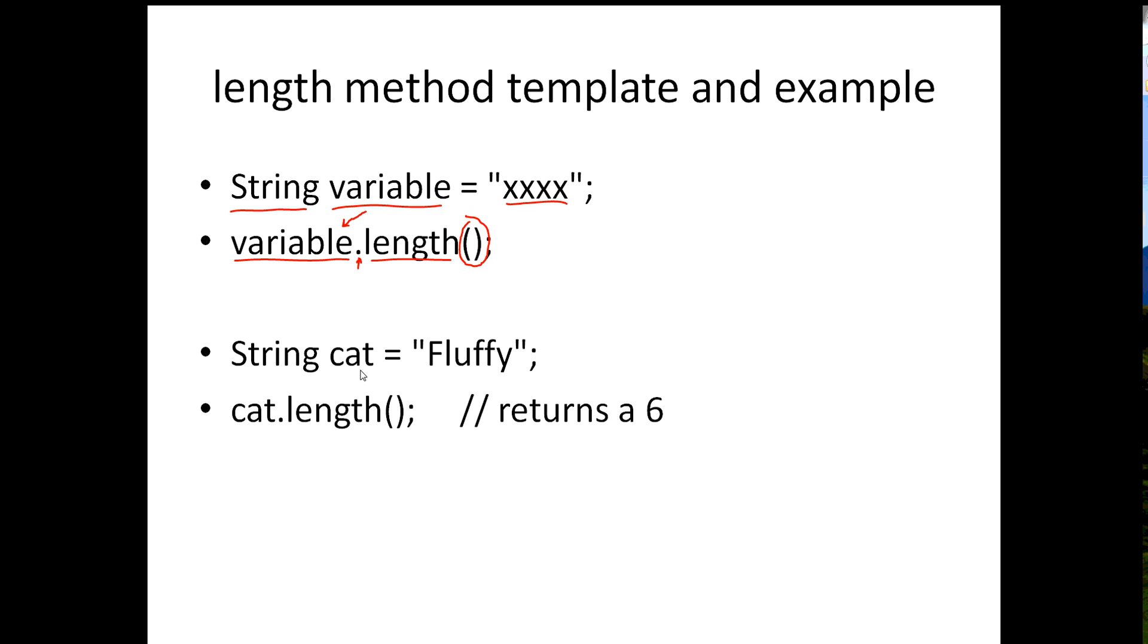Now an example of how that works. If you have a variable named cat, this is data type string, and here's the literal string that's the value of this variable. You have the name of the variable, which is cat, dot, and then length in parentheses. What will happen is Java will return a 6 because it will count 1, 2, 3, 4, 5, 6, and then return a 6.